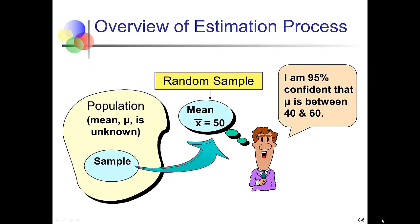The general idea when estimating a confidence interval: we have a whole population and we're interested in knowing about the population mean, but we don't actually know what that is. We draw a sample and hope it's approximately representative. We calculate the mean from that sample—pretend we're talking about age and we get an average age of 50. We apply statistical technique and can say we're 95% sure the true average age is between 40 and 60 years old.